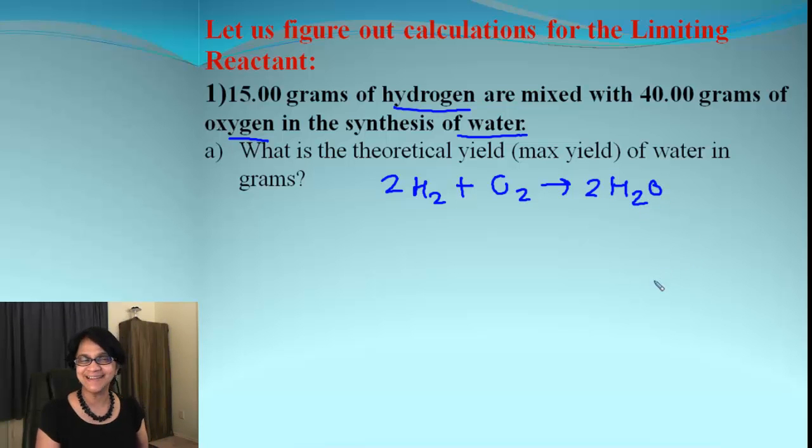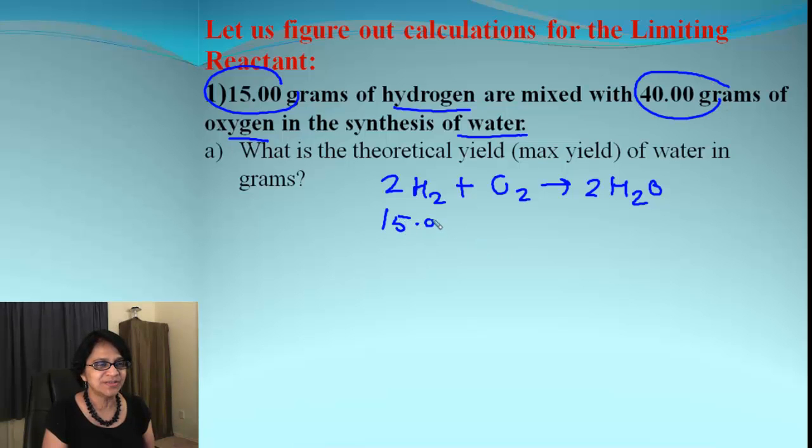Nobody else is given to us. We are beginning with different quantities of the reactants. Let's write that down. For hydrogen, 15 grams, and for oxygen, 40 grams. We need to find out what is the theoretical yield.